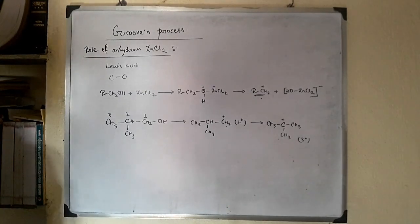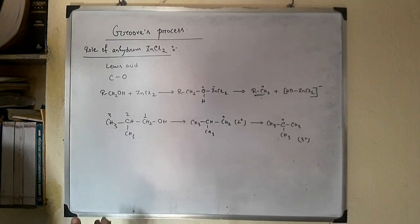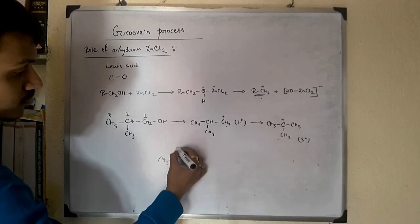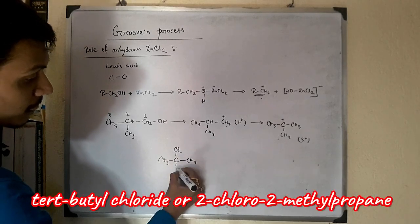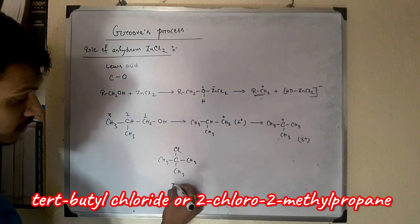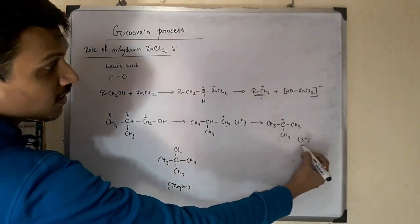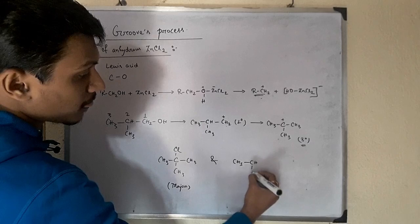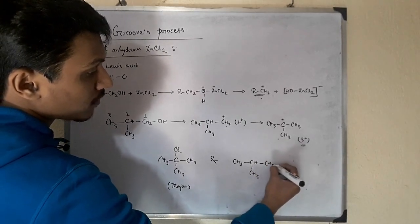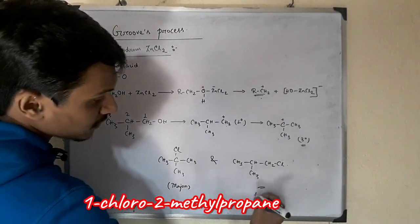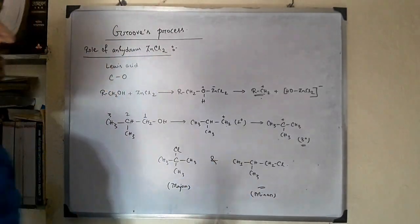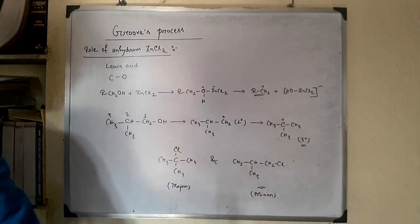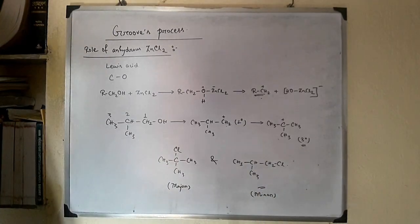Finally, when the chloride ion attacks, we get a product which is a mixture of two alkyl chlorides. One is tertiary butyl chloride, the major product, as tertiary carbocation is more stable. We also get this product as the minor product because primary carbocation is least stable. This is 2-chloro-2-methylpropane and this is 1-chloro-2-methylpropane. A mixture of chloroalkanes is obtained.